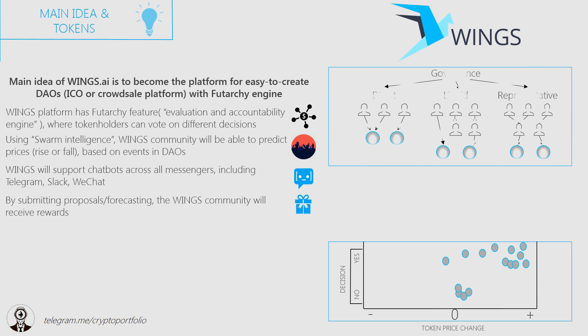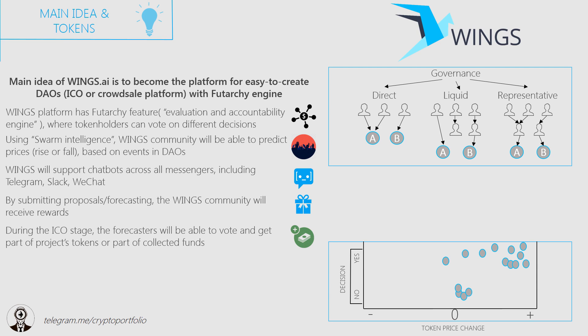Direct governance is when you vote directly on the matter. Liquid governance is when you can vote directly or you can delegate your vote to someone else. Another option is representative governance — it consists of delegates only, where you have to choose the right person to vote. As I understand, you can get a lot of tokens from voting on the success of projects when they are in the ICO stage on the Winx platform.